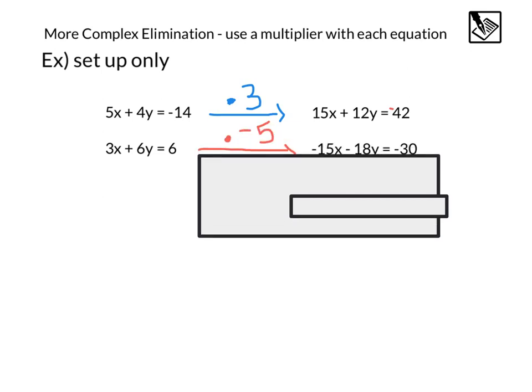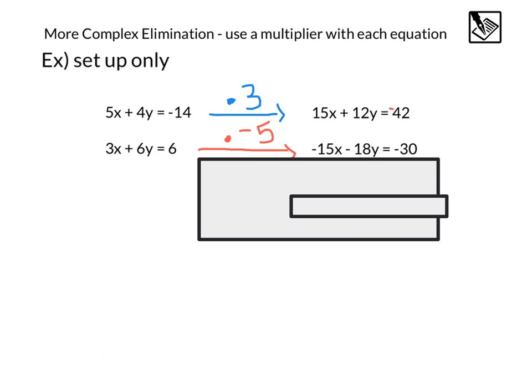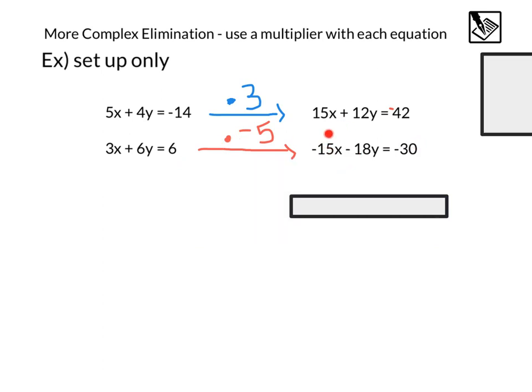Our second equation, we're going to multiply by negative 5. That's going to give us negative 15x. 6 times negative 5 is negative 18y. 6 times negative 5 is negative 30. When we look at this new system that's actually the same system because we just used a multiplier to maintain equality, now this 15x minus 15x will be able to cancel out and we will be able to do basic elimination like we've been doing.